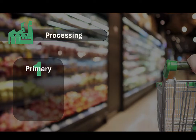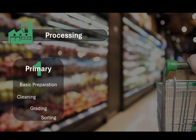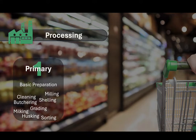This stage focuses on the basic preparation and preservation of food items — like cleaning, removing dirt, debris, and contaminants from raw materials; sorting and grading, categorizing raw materials based on size, quality, and other attributes; shelling and husking, removing the outer coverings from nuts, grains, and seeds; butchering, slaughtering animals and initial cutting of livestock into primal cuts; milking, extracting milk from dairy animals; and milling, grinding grains into flour and other forms. Primary processing might include washing and peeling fruits and vegetables, shelling and drying nuts and seeds, milling wheat into flour, or pasteurizing milk.